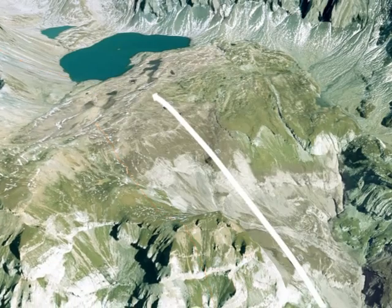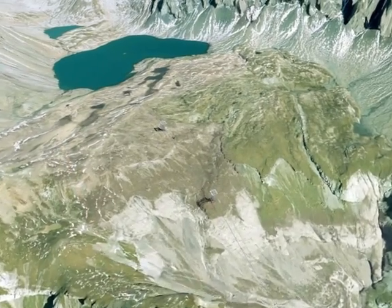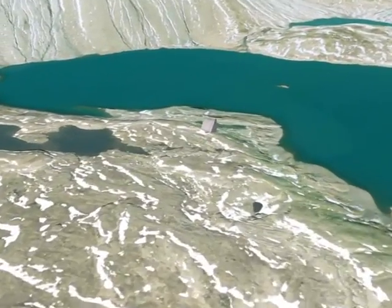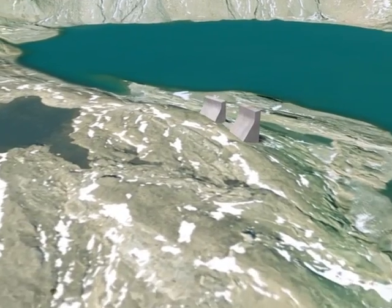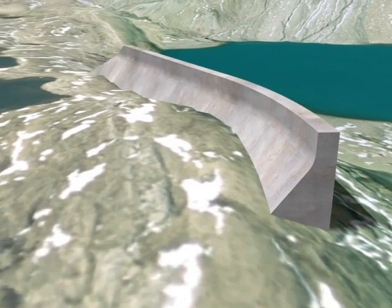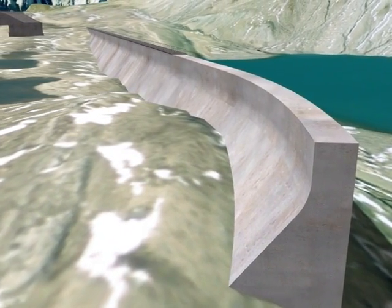At an altitude of 2,500 meters, construction here is only possible in the summer. The barrage wall consists of 15 meter wide blocks. It will take three summers to build the entire wall.